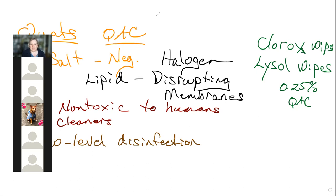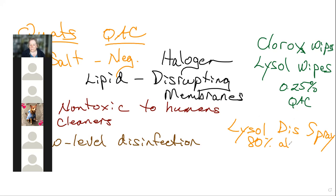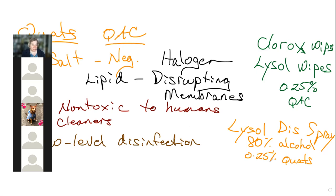Lysol disinfectant spray has about 80% alcohol — ethanol — and adds about 0.25% quats. So we're combining two low-level disinfectants. Put them together and you get a high-level disinfectant. By themselves, each is low level; combined, you get high level.